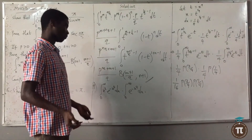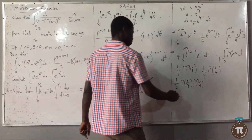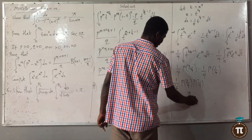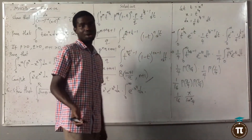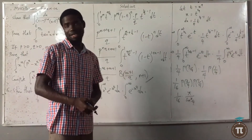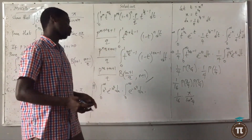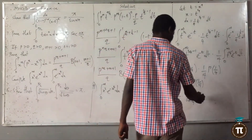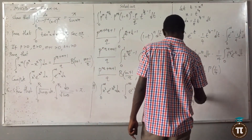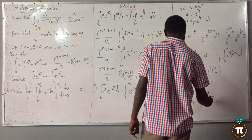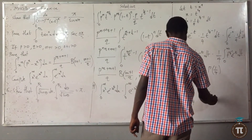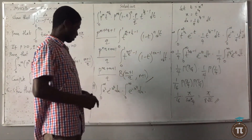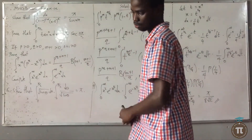Using gamma(3/4)·gamma(1/4) equals π/sin(π/4), and sin(π/4) equals √2/2, we get (1/16) times π/(√2/2) equals (1/16) times 2π/√2 equals π/(8√2). That is the answer for question 9.